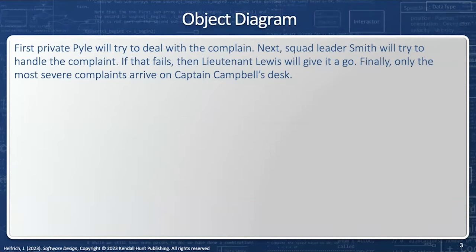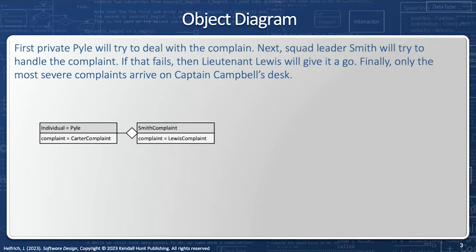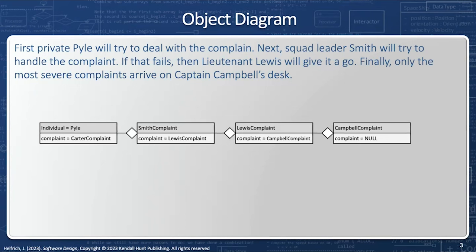So we'll start with an object diagram. First, Private Pyle will try to deal with the complaint. If he cannot, then Squad Leader Smith will try to handle it. If that fails, then Lieutenant Lewis will give it a go. And finally, only the most severe complaints arrive on Captain Campbell's desk. Notice the vast majority of the complaints get dealt with early in the chain, and only the most severe would make it to Captain Campbell's desk.